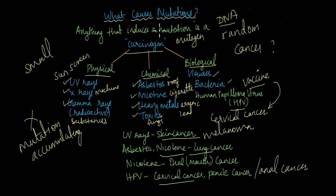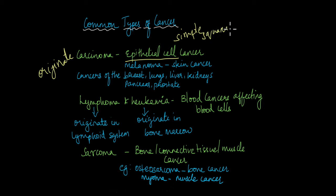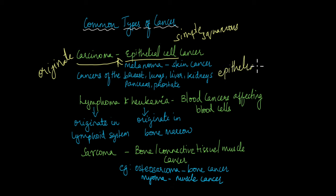Now let's look at some common types of cancer. A lot of cancers are classified based on where they originate — the type of cell they originate from. If the cancer originates from epithelial cells, that is known as a carcinoma. Examples of carcinomas include melanomas and cancers of the breast, lungs, liver, kidneys, pancreas, and prostate, if they originate from the epithelial cells lining these organs.